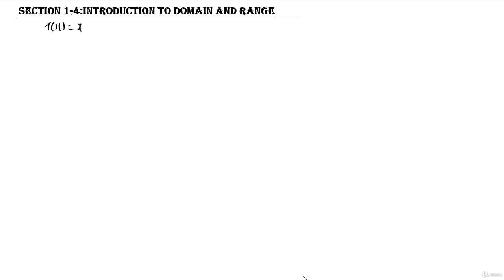Let's say we have a function f of s equals s squared plus 2. If you remember what I said about the definition of a function in the previous lessons, a function is just like a mathematical machine. It is a machine that takes in an input value — we call this the input — to give us an output value. So let's say we plug in any number in place of s; this will be the input.